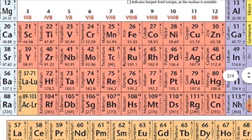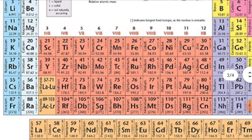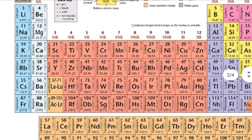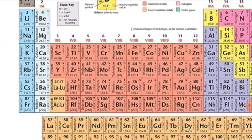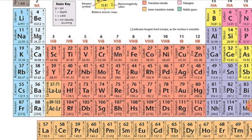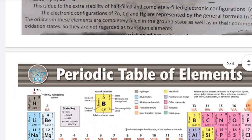Why are they called D-block elements? Because in these elements, the electrons fill the D sub-shell. The D sub-shell filling accounts for their placement, and as they show transition from S-block elements on the left side to P-block elements on the right side, they are also known as transition elements.